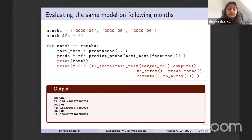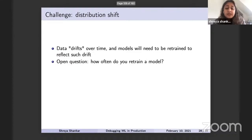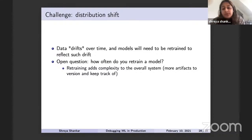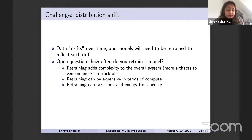Evaluating on April, May, and June confirms performance is definitely not 66%. This motivates key questions: how do we establish confidence in the train-and-test process, when do you know to retrain, and how often? If you retrain thousands of times a day, that adds complexity — more artifacts to version, it's expensive in terms of compute, and for large transformer models the cost is significant.